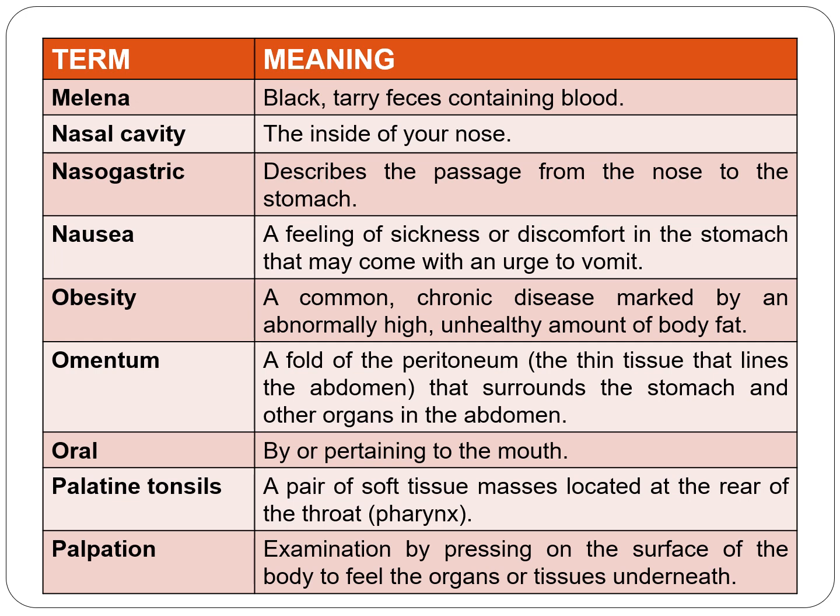Obesity is a common chronic disease marked by an abnormally high, unhealthy amount of body fat. The omentum is a fold of the peritoneum — the thin tissue that lines the abdomen — that surrounds the stomach and other organs in the abdomen. Oral means by or pertaining to the mouth.